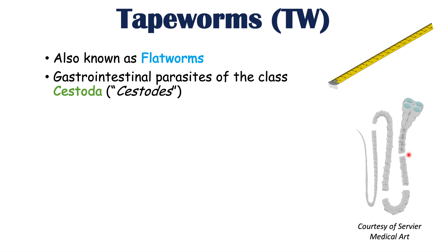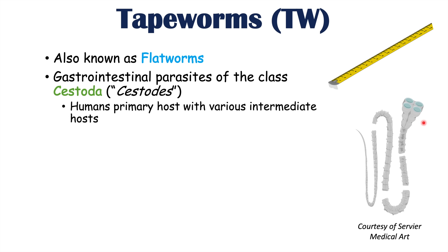Here is an image of what a tapeworm might look like. There are many different species of tapeworms, but several species infect humans where humans are the primary host. Each species of tapeworm often has a different intermediate host, which we'll talk about when we discuss specific species in the upcoming slides.